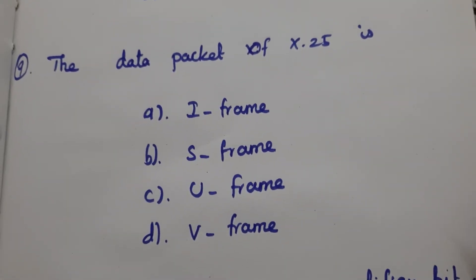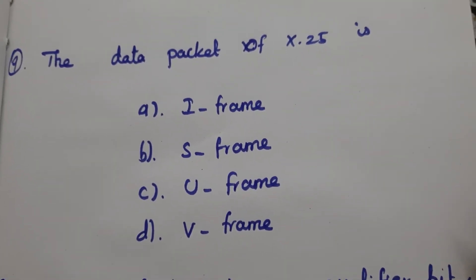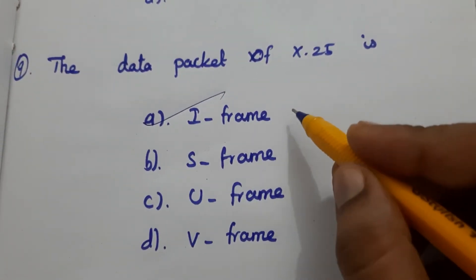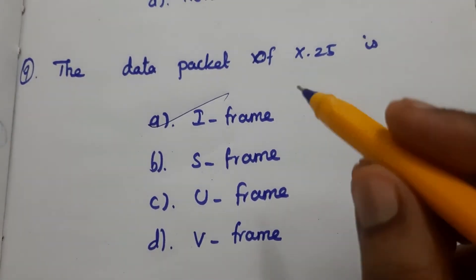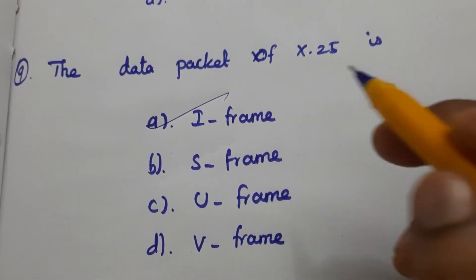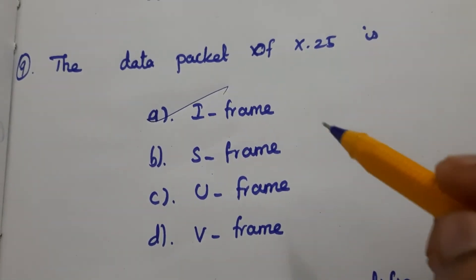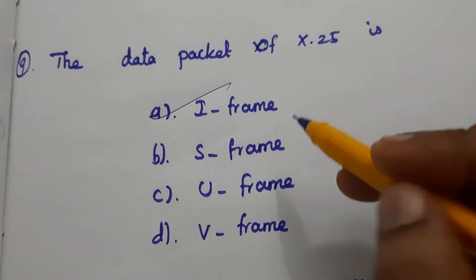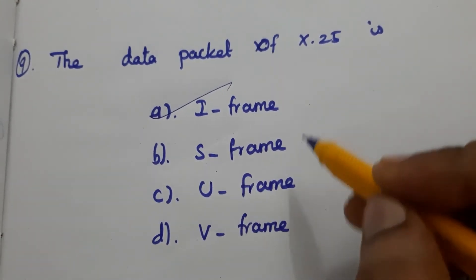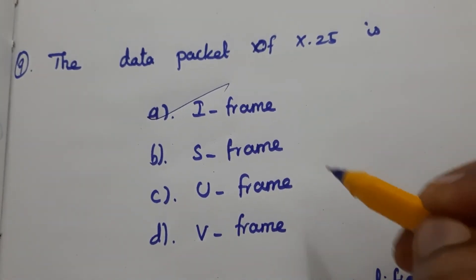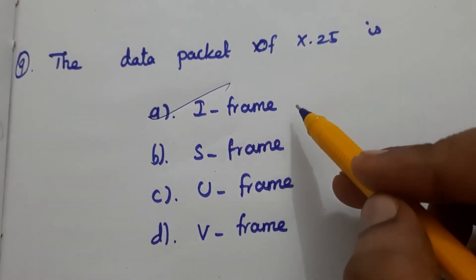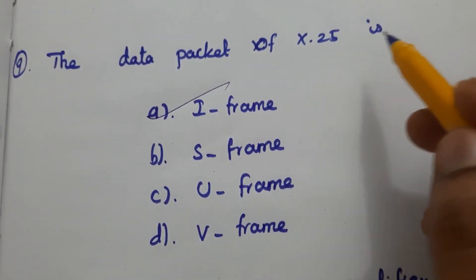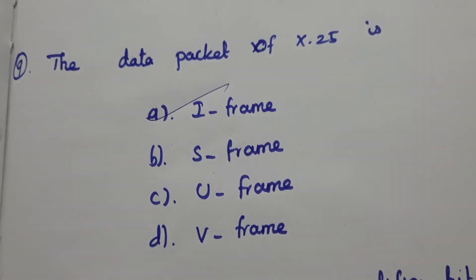Next question: The data packet of X.25 is the I-frame, because the I-frame carries user data. The remaining S-frame and U-frame are control frames. So the data packet of X.25 is I-frame, and A is the answer.